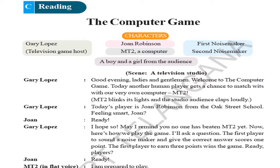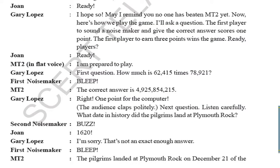Ready players? John: 'Ready.' MT2 in flat voice: 'I am prepared to play.' Gary Lopez: 'First question — how much is 62,000,415 times 72,921?' First noisemaker: bleep. MT2: 'The correct answer is 4,952,585,421,5.' Gary Lopez: 'Right! One point for the computer.' The computer gives the answer very quickly. MT2 is a computer. The audience claps politely.